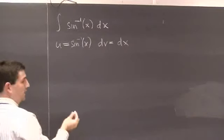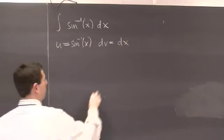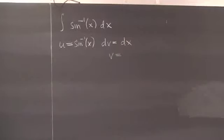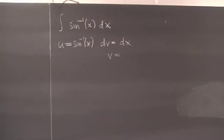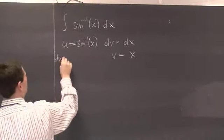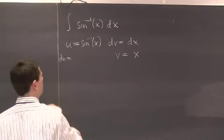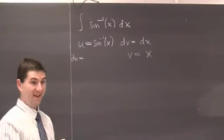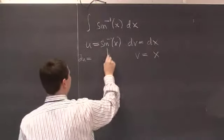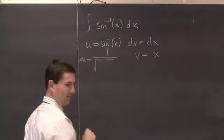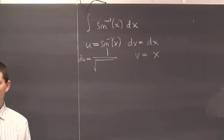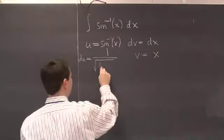Let's do the easy thing first. If dv equals dx, then v equals x. What's du equal? It's 1 over the square root of 1 minus x squared — the derivative of arcsin. That's impressive that you remember this.